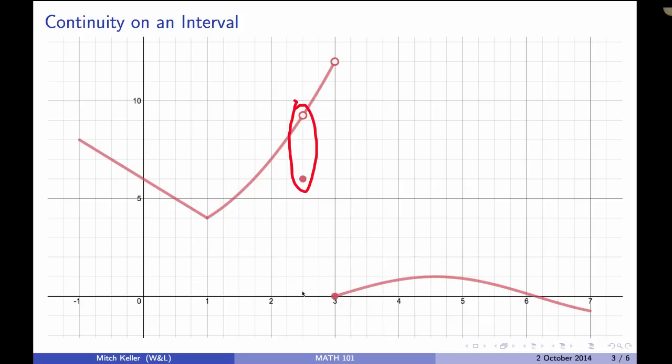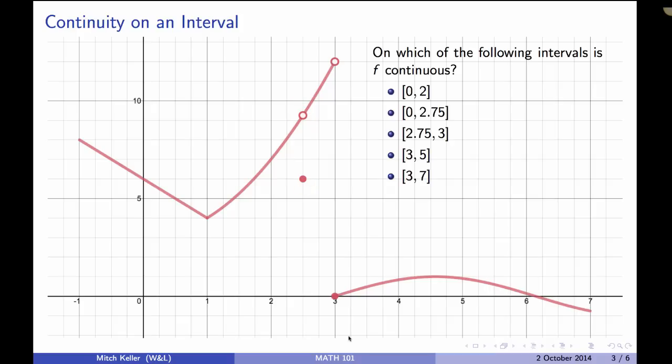Here at x equals 3, we have what we usually call a jump discontinuity, where the limit from the left as x approaches 3 appears to be about 12, and the limit as x approaches 3 from the right is 0, and the function value f(3) is 0. So the limit doesn't exist at 3.